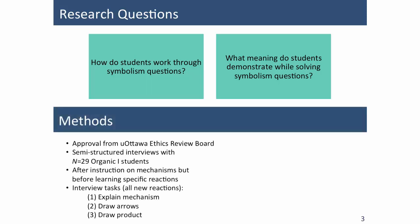We conducted 29 semi-structured interviews with students after they had received instruction on mechanisms, but before they had learned specific reactions. During the interviews, students were asked to work through symbolism questions to explain a complete mechanism, to draw arrows given reactants and products, and to draw products given the reactants and electron pushing arrows.